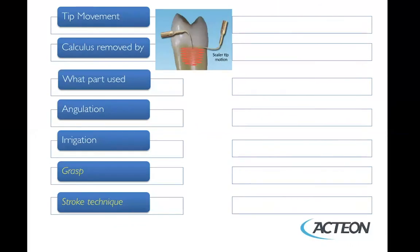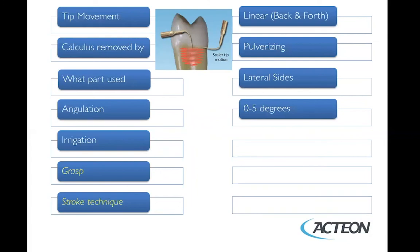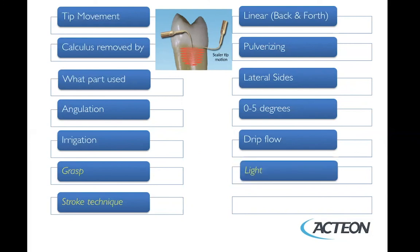The piezo uses linear back-and-forth motion. Calculus is removed by a pulverizing type of action, so you'll see a grainy, sandy appearance as calculus comes off, as opposed to magnetostrictive where you see more chips or chunks. You use the lateral sides, the angulation is zero to five degrees, irrigation is a drip flow, and the grasp is about 20 grams — similar to a periodontal probe. It's a very light, relaxed grasp, and stroke technique uses overlapping strokes of one to two millimeters.